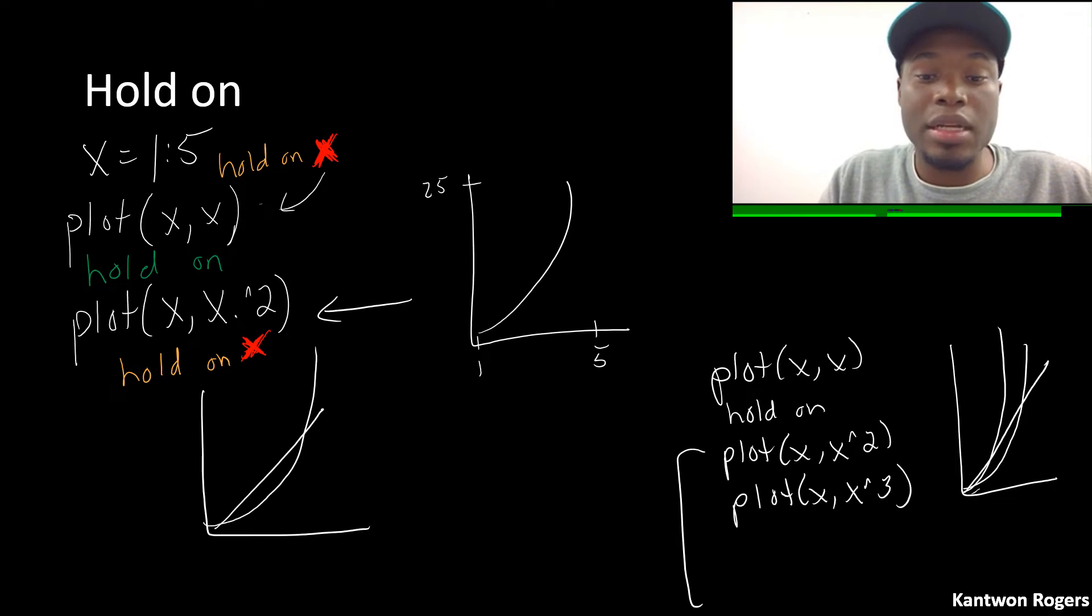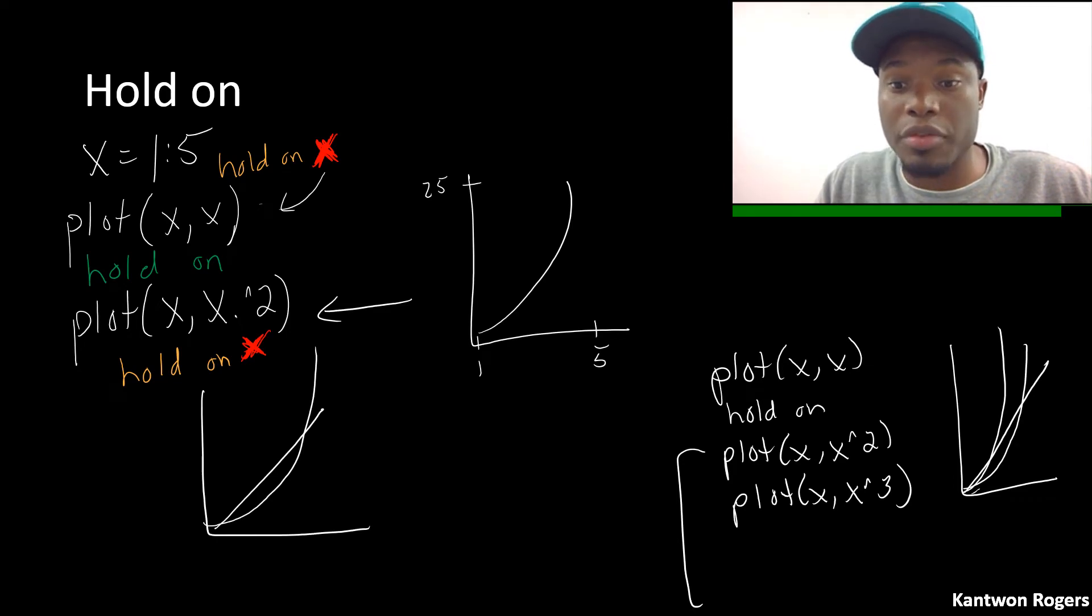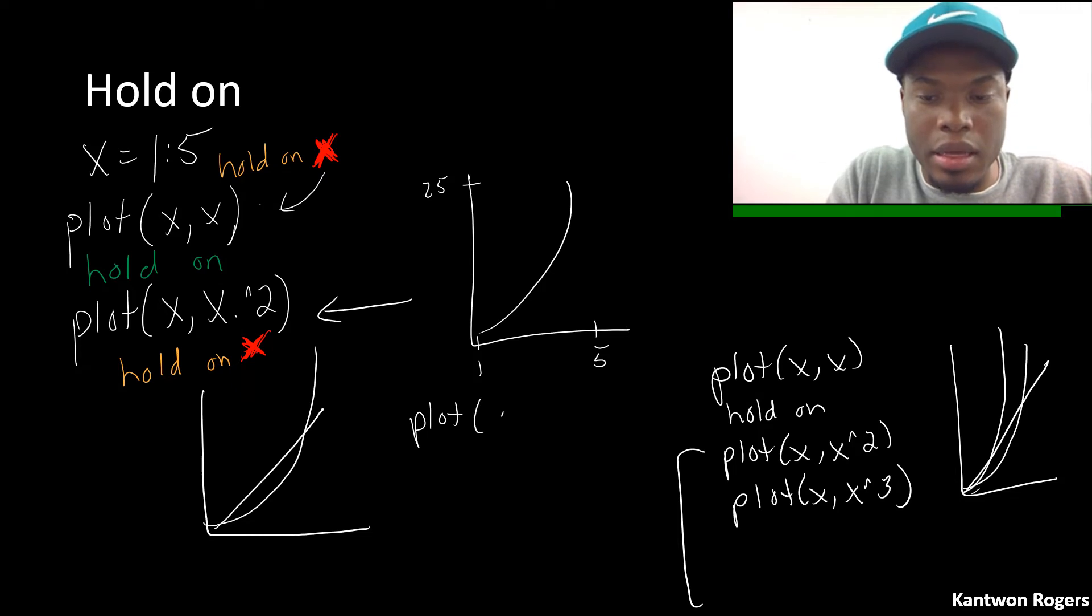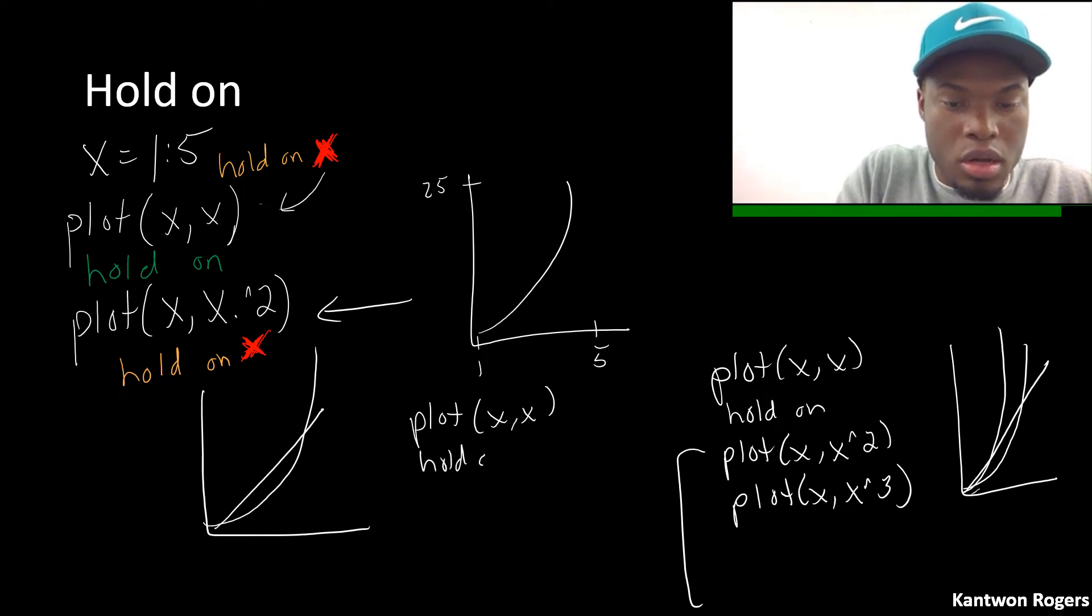Now however, the way that I turn hold on off is by calling hold off. So if I were to say plot x,x, hold on, then plot x,x squared, then a hold off...